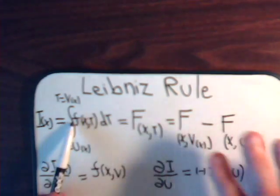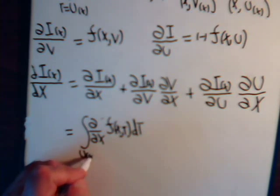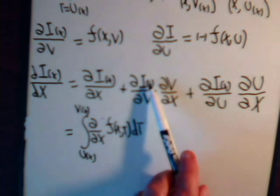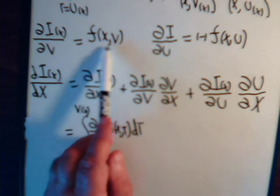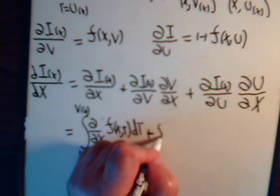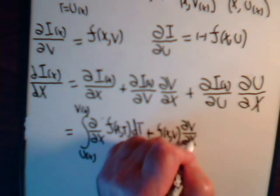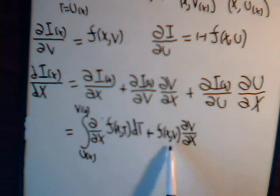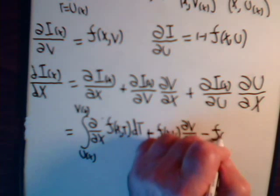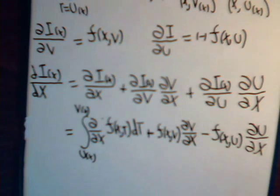As shown in previous videos, we can move the partial inside the integral, and that gives us this expression with limits u(x) to v(x). Then we have the remaining terms: the partial of I(x) with respect to v is f(x,v), times the partial of v with respect to x. And the partial of I(x) with respect to u is minus f(x,u), times the partial of u with respect to x.